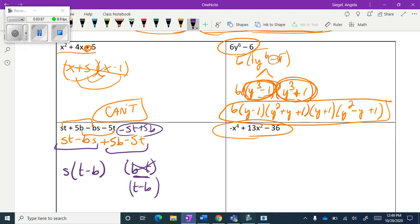So that it looks like this, and that might be a little bit easier to work with. I need this to be t minus b, so this is a little bit easier to see that I'm going to factor out a negative five. So my final answer is s minus five times t minus b.